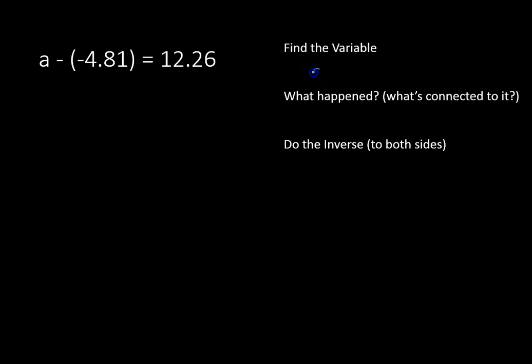Our variable is the letter a. What happened to this variable or what's connected to it is that we are subtracting negative 4.81. To do the inverse or the opposite to both sides of the equation, we are going to add negative 4.81. That's what we're going to do.